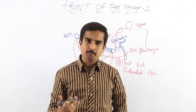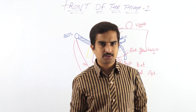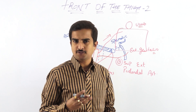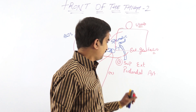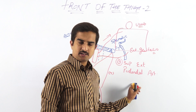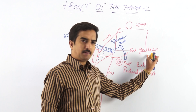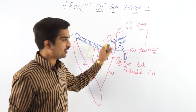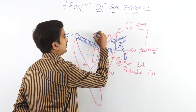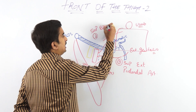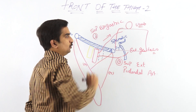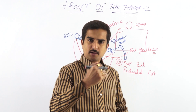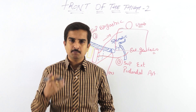To summarize: there are totally three cutaneous arteries arising from the femoral artery. The first is the superficial external pudendal artery, which supplies the skin over the external genitalia. The second is the superficial epigastric artery, which supplies the skin of the lower part of the anterior abdominal wall below the level of the umbilicus.